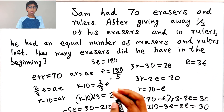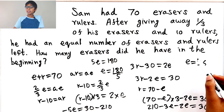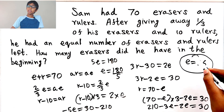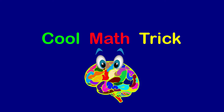So how many erasers did he have in the beginning? Sam had 36 erasers in the beginning. Let's keep doing more math — and like this video!